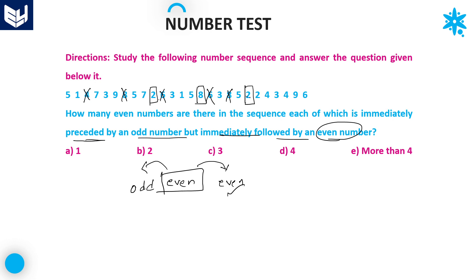Next 2 — preceded by odd and followed by even — you can count this 2. One more 2 — preceded by even, so do not count. Then 4 — preceded by odd? No, do not count. One more 4 — preceded by odd but followed by even? No, that is wrong, do not count. The total number of even numbers satisfying the given condition — Option C is the right answer.